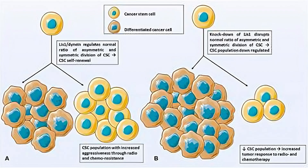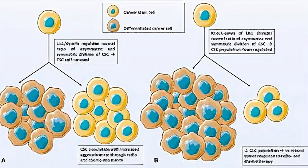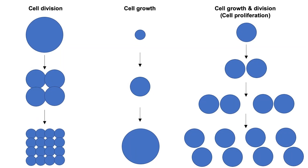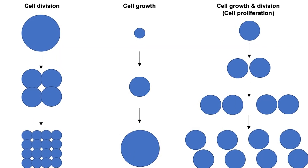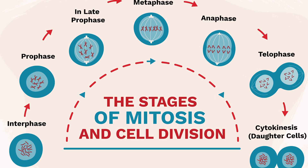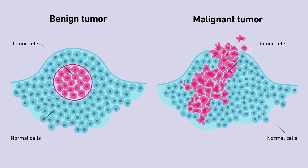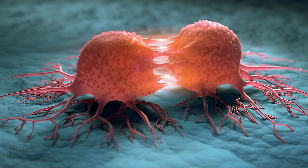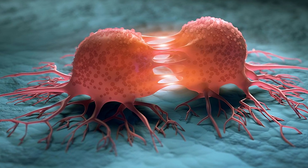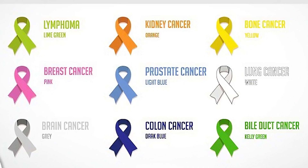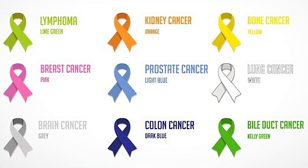What is cancer? Cancer is a disease that arises from the uncontrolled growth and division of abnormal cells in the body. Normally, cells in the body divide and grow in an orderly fashion, with old or damaged cells being replaced by new ones. However, in cancer, cells divide and grow uncontrollably, forming a mass of cells called a tumor. It's important to note that cancer is not a single disease, but rather a collection of diseases with different underlying genetic and biological characteristics, which is why different types require different treatments.